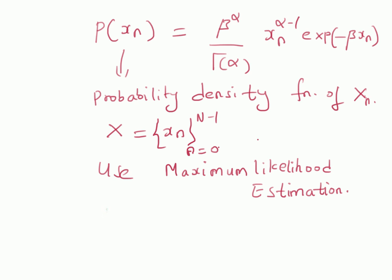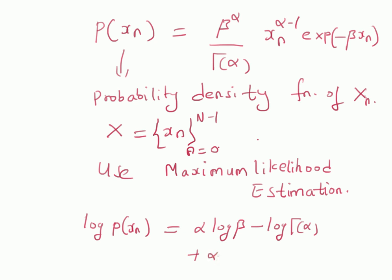The first step in this estimation method is we have to define the logarithm of the probability density function. That is, log p(x_n) is given by: alpha * log(beta) minus log(Gamma(alpha)) plus (alpha minus 1) * log(x_n) minus beta * x_n, since the logarithm of the exponential term becomes minus beta * x_n. That is the log of the PDF of the observation x_n.